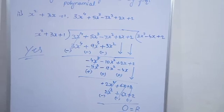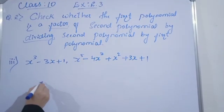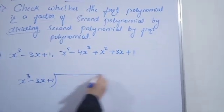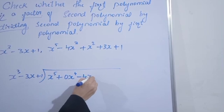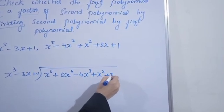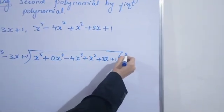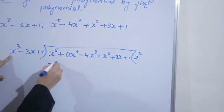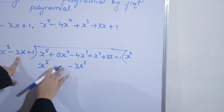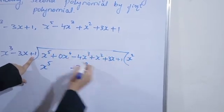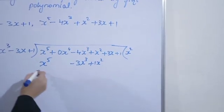Ab next one. Chalo next one karte hain. Same — first polynomial rakhenge: x⁵. x⁴ nahi hai to 0x⁴ rakhenge. Cube diya hua hai, x² plus 3x plus 1. x⁵ chahiye, x³ hamare paas hai, ab x² chahiye. x² into x³ we get x⁵. Plus into minus = minus 3 into x = 3x³. Jahaan pe same variable ho wahaan pe likhenge: 1 into x² = 1x². Sign change.